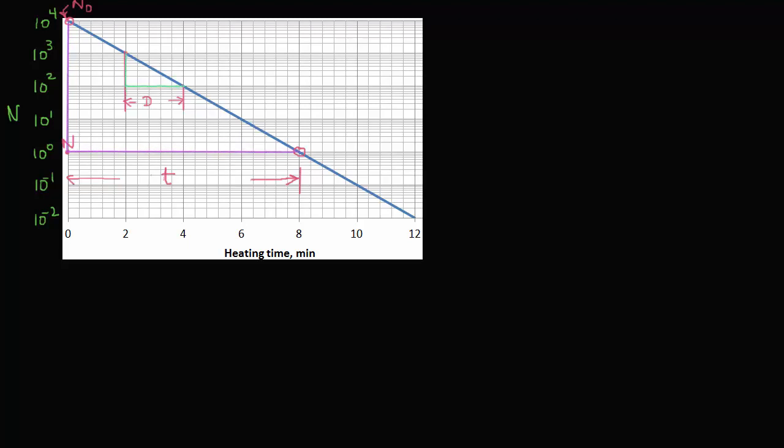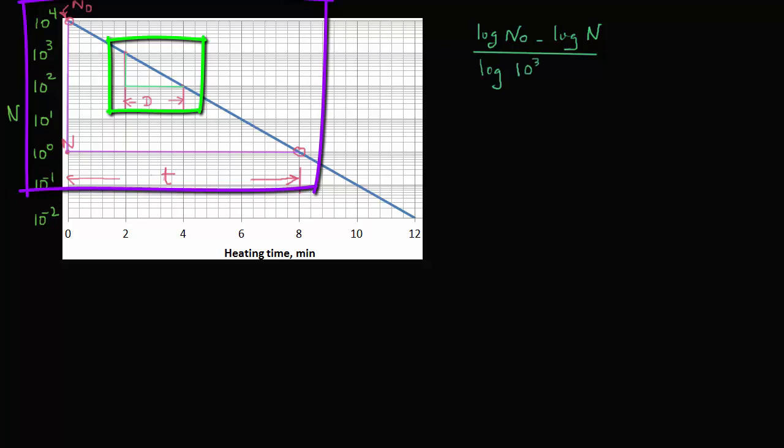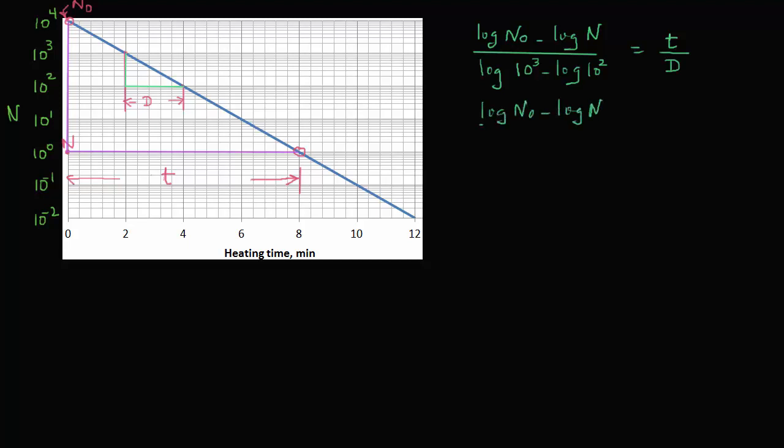One representing the reduction from n0 to n, and the other one representing a microbial reduction for one log cycle. So we can write for these two similar right-angle triangles, log n0 minus log n divided by log of 10 raised to power 3 minus log of 10 raised to power 2 equals t over d. So that denominator will be 1 on the left-hand side. So we have log n0 minus log n equals t over d.